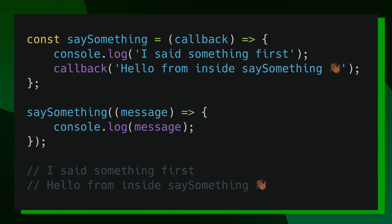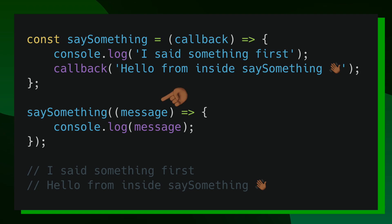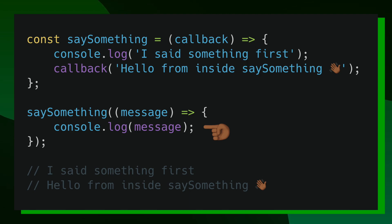We can see that happening with this updated code example where we still have the saySomething function taking in our callback. But instead of calling our callback function without passing in any arguments, we're passing in the new string 'hello from inside saySomething' as an argument into the callback. So inside of our function definition, we'll have access to that passed-in argument. Instead of having an anonymous arrow function that takes in no arguments, we now have one that takes in a new argument that we call message. So instead of printing out 'I said something second', we're printing out the message we got from inside of saySomething. Inside of our console, we should see 'I said something first' and 'hello from inside saySomething.'